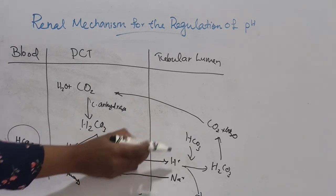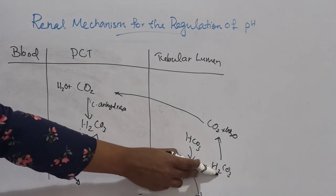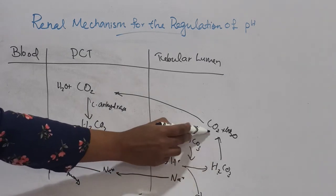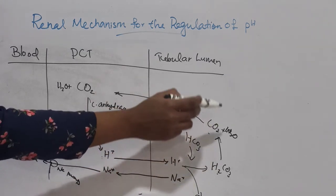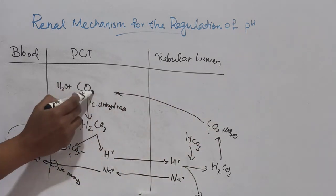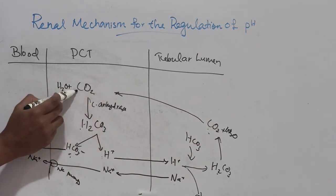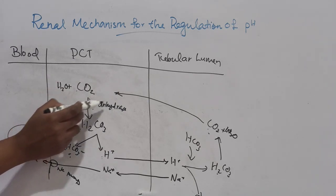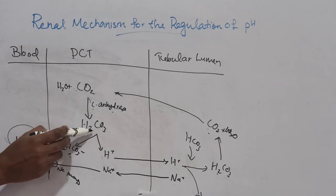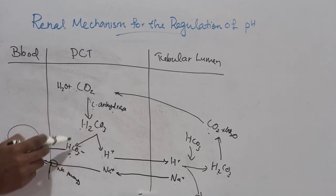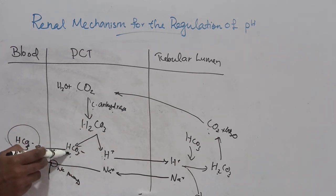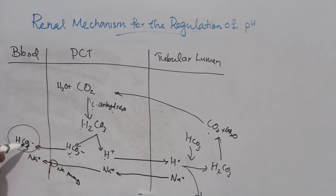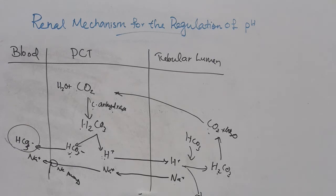In summary, filtered bicarbonate combines with H+ to form carbonic acid, which dissociates to CO2 and water. CO2 enters the tubular cell and reforms carbonic acid via carbonic anhydrase, which then dissociates to H+ and HCO3−. The HCO3− is reabsorbed into the blood together with sodium. This is the recovery or reabsorption of bicarbonate — the second mechanism.